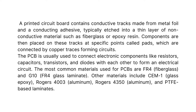Components are then placed on these tracks at specific points called pads, which are connected by copper traces forming circuits. The PCB is usually used to connect electronic components like resistors, capacitors, transistors, and diodes with each other to form an electrical circuit. The most common materials used for PCBs are FR4 fiberglass and G10 FR4 glass laminate. Other materials include SEM1 glass epoxy, Rogers 4003 aluminum, Rogers 4350 aluminum, and PTFE-based laminates.